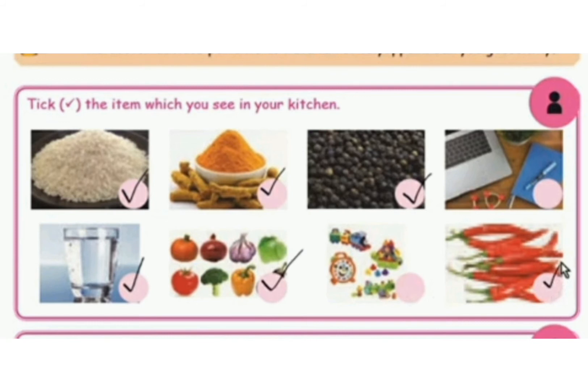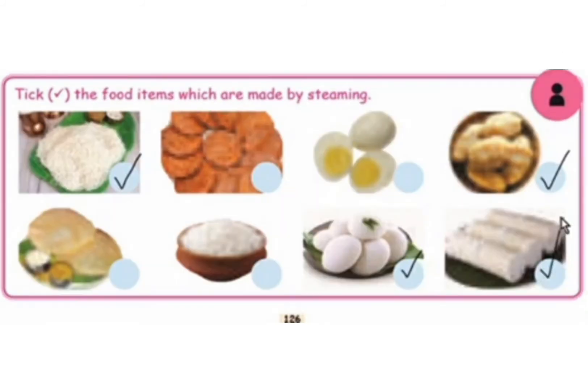Tick the food items which are made by steaming. Idiyappam — made by steaming, so put a tick. Otherism — not made by steaming, no tick. Egg — we boil eggs, so no tick. Potato — we steam it, so put a tick. Puri — no tick. Rice — no tick. Idli — made by steaming, put a tick. Puttu — also made by steaming, put a tick.